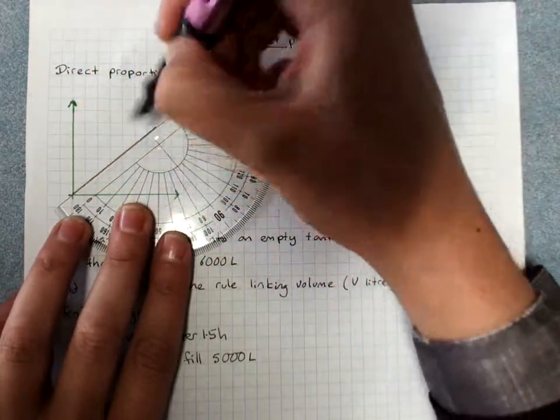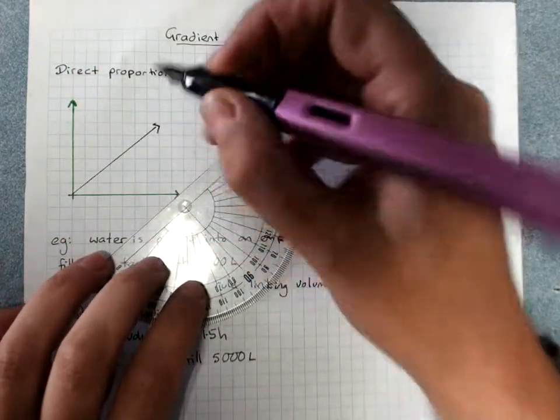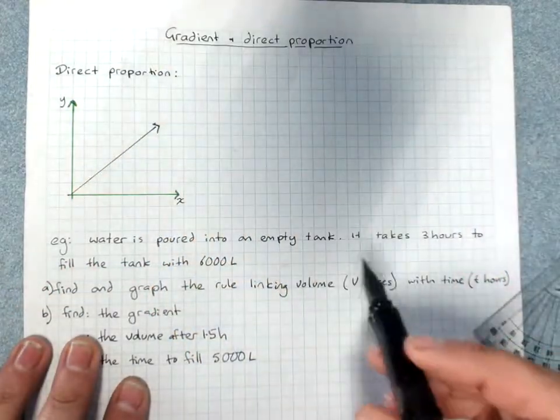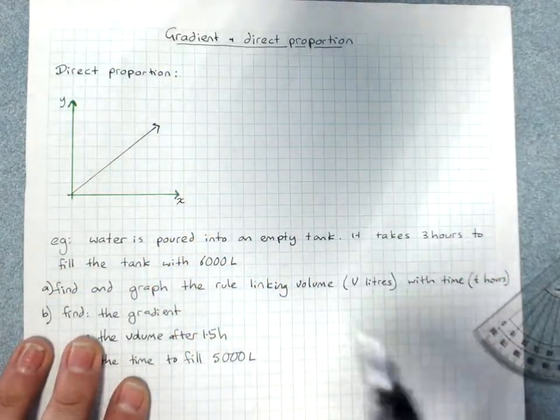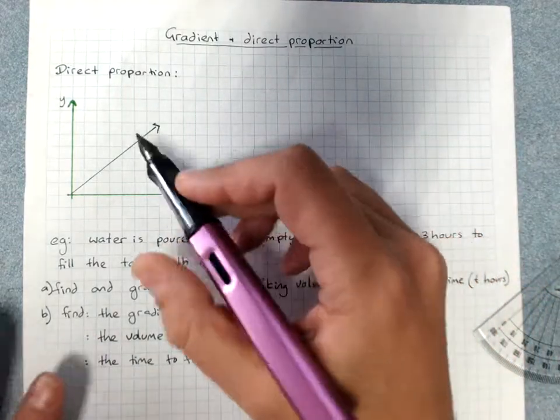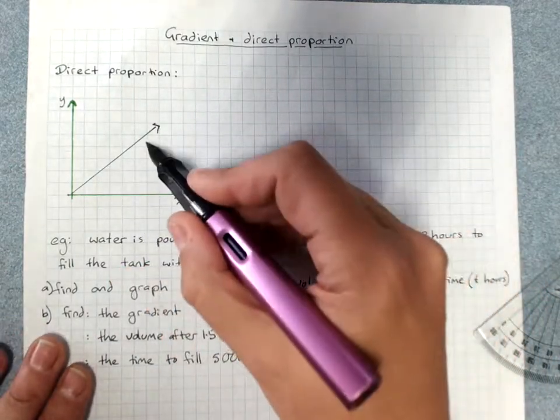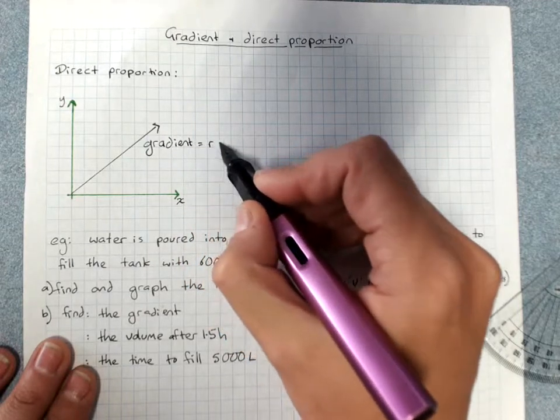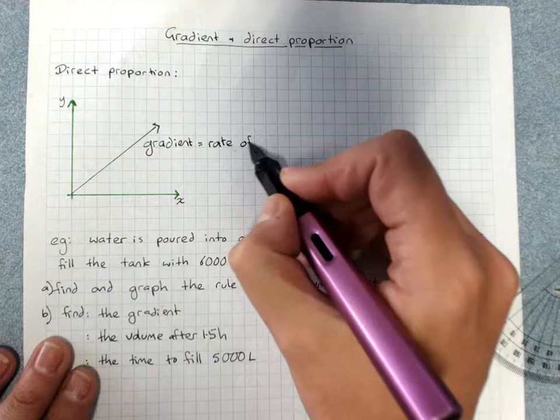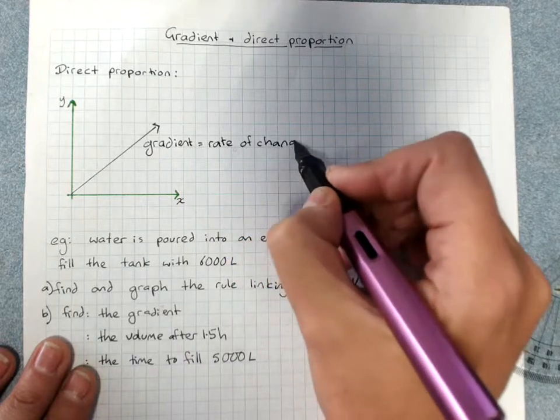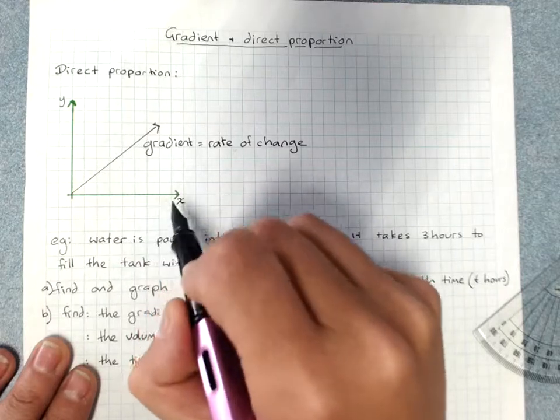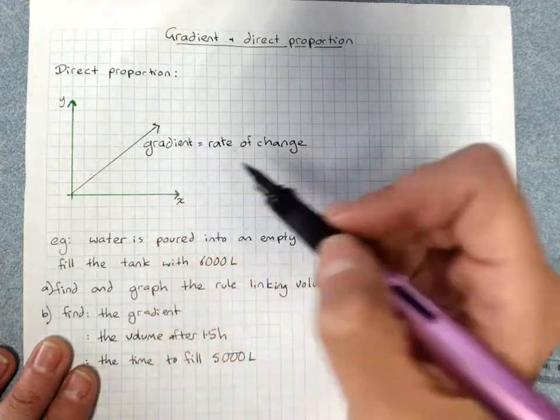This is a relationship between x and y that is in direct proportion. So the rate of change of one variable to the other is constant. The gradient is the rate of change. That is, as x increases, how much does y increase per value of x? That's the gradient, the rate of change.